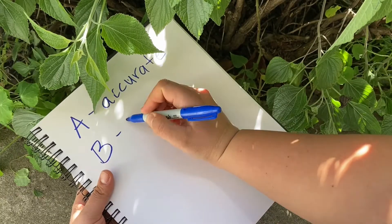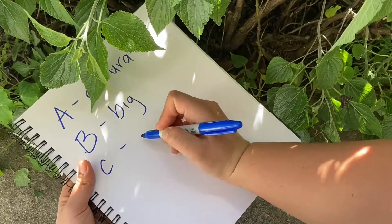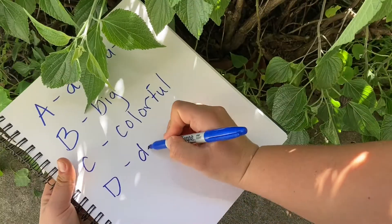B stands for big. So when you're drawing something small, you want to make your drawing big so that you can see it better. C stands for colorful — if the object you're drawing is colorful, it's good to add those colors too. D stands for detail. Sometimes when you're looking at something it can be complicated, so adding details can help us remember what it looks like.